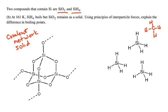At 161 Kelvin, SiH4 boils, but SiO2 remains a solid. So one boils, but the other remains a solid. Using principles of interparticle forces explain the difference in their boiling points.